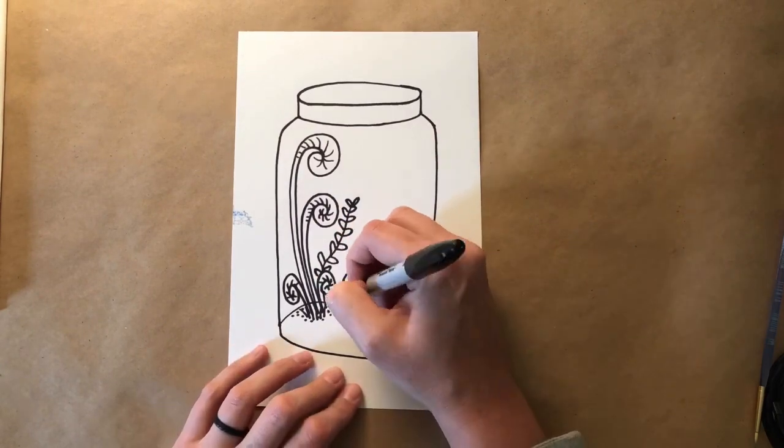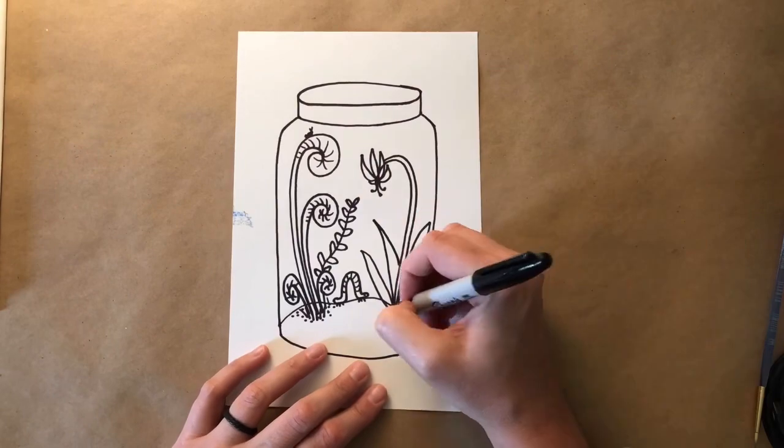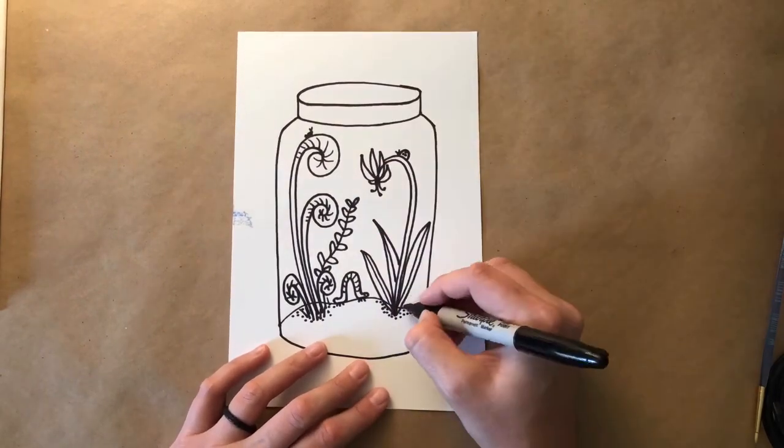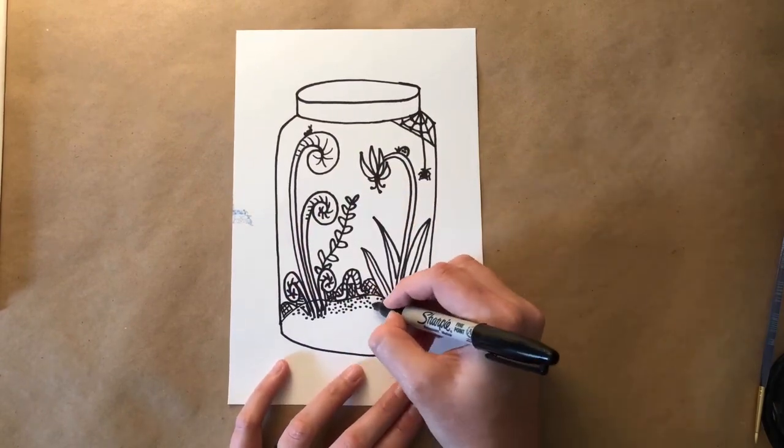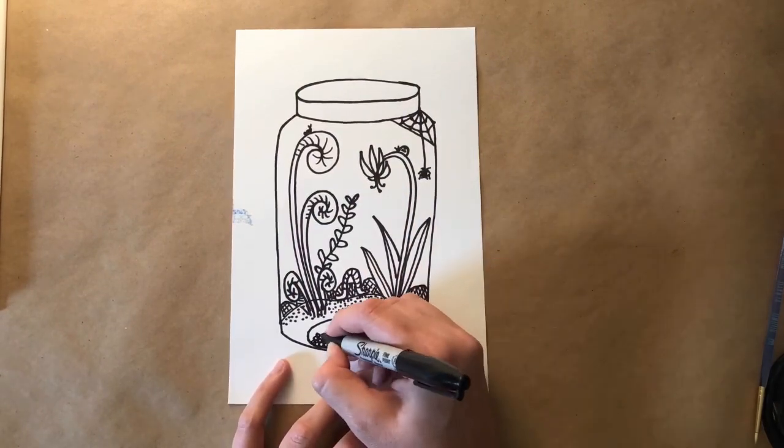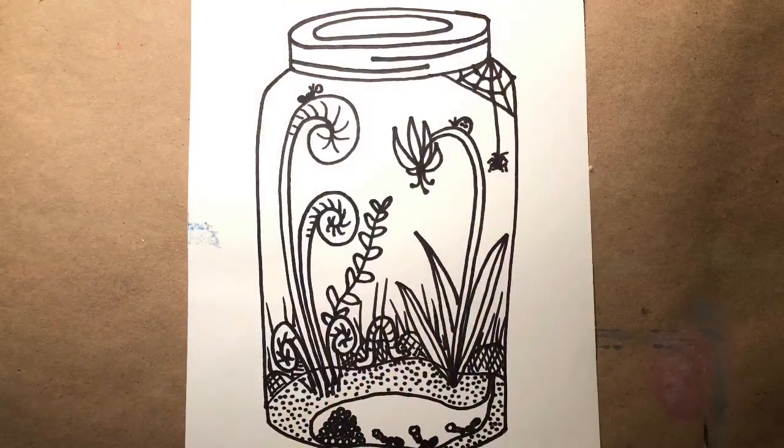For my jar, I'm thinking about some of the hikes that I've been on and I'm creating an outside world inside of my jar. I'm adding insects and what they might be doing and plants, and I'm adding detail with stippling, dots, and lines to make my drawing more interesting.